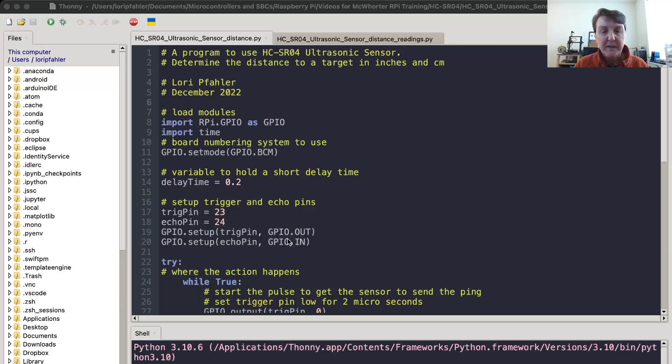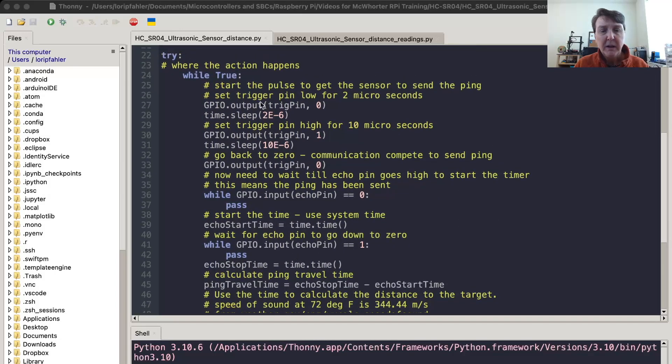We'll set up the trigger and echo pins on GPIO 23 and 24 and set them up as output and input. In our while true loop, we'll start the process by setting the trigger pin to low for 2 microseconds. Then we'll set it high for 10 microseconds to trigger the ultrasonic burst. Then we'll set it low again.